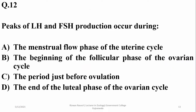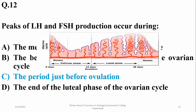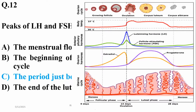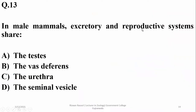Question number twelve: peak of LH and FSH production occurs just before ovulation, so option C. As you can see, LH and FSH are at their peak or highest level during the ovulatory phase.